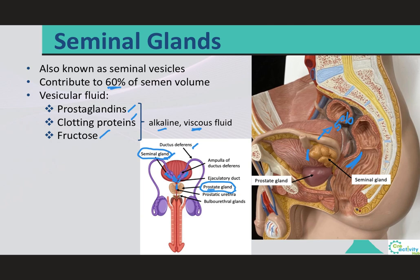Prostaglandins have two functions: they facilitate sperm transport within the female reproductive tract by inducing peristaltic contractions, and they also induce sperm motility. Regarding clotting proteins, fibrinogen facilitates seminal clotting after ejaculation. This clotting of semen helps keep ejaculated sperm in the female reproductive tract — if the semen remained very liquid it would easily flow out, so clotting keeps it in the female body longer, keeping the sperm there as well and increasing the chances of fertilization.